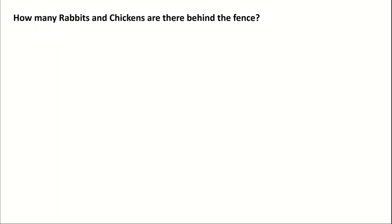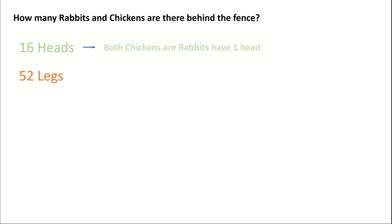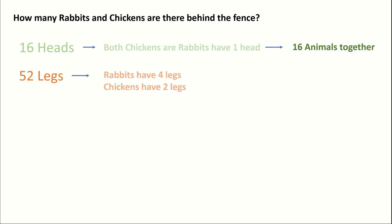How many rabbits and chickens are there behind the fence? Well, we know that there are altogether 16 heads and there are altogether 52 legs. We also know that both chickens and rabbits only have one head — so that means that altogether there are 16 animals.